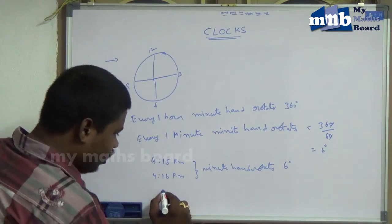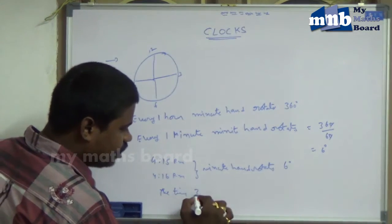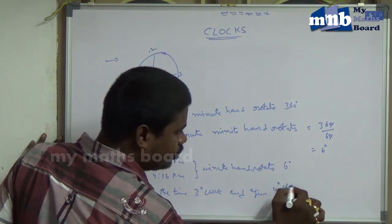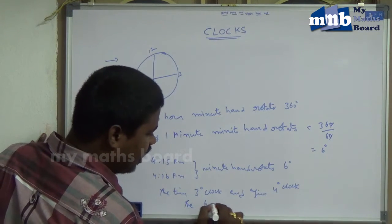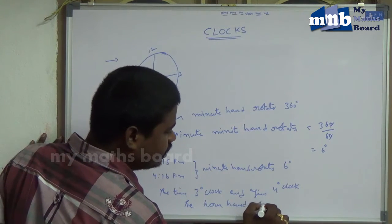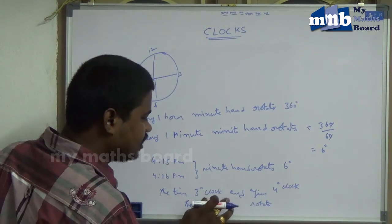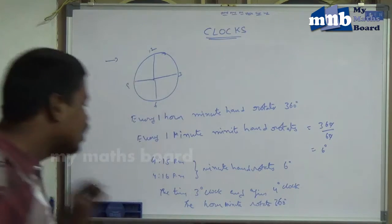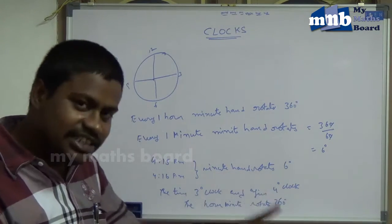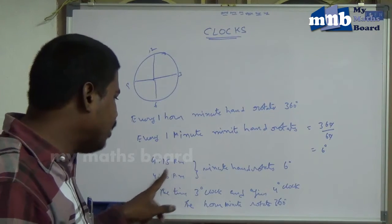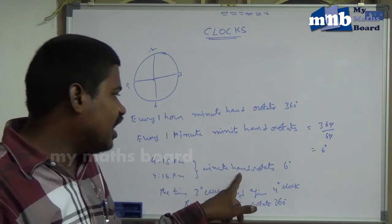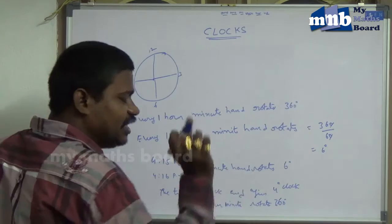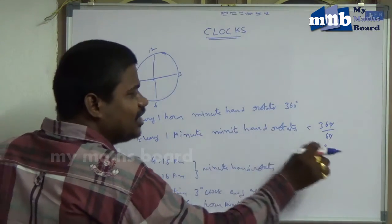At the same time, the time is 3 o'clock and then 4 o'clock — the hour hand rotates. From 3 to 4, the minute hand rotates 360 degrees. And from 4:15 PM to 4:16 PM, it takes 1 minute, and the minute hand rotates 6 degrees. So every 1 hour, minute hand rotates 360 degrees, and every 1 minute, minute hand rotates 6 degrees.